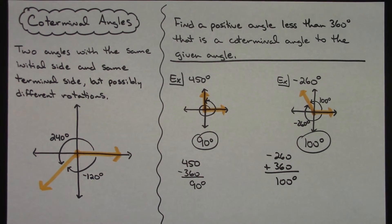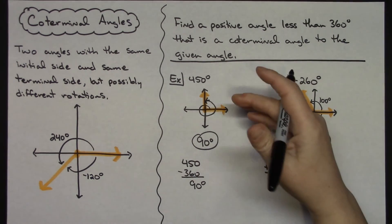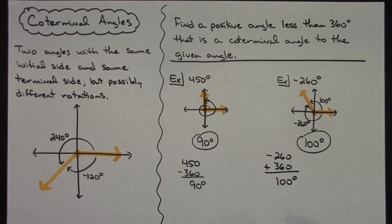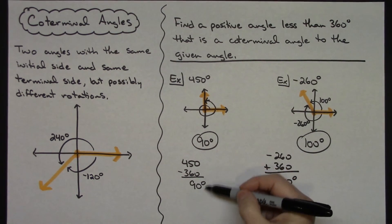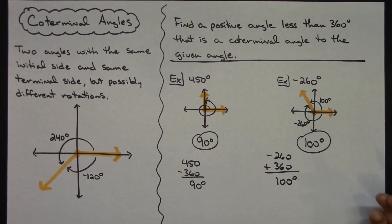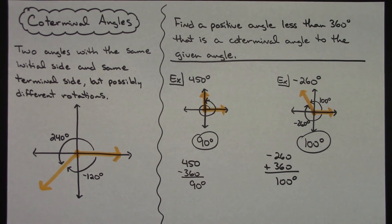Playing around with co-terminal angles — what they are and how you can visualize them — it always helps to draw a picture so you can visualize what's going on. But there are shortcuts: some adding and subtracting of 360 degrees will get you to your answer. Thanks for watching.